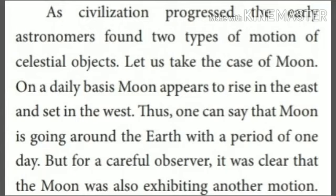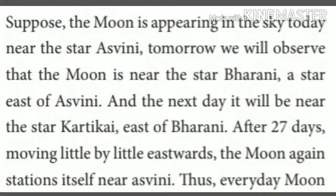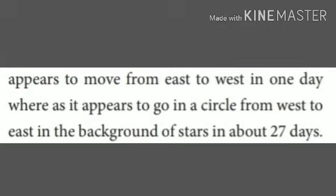As civilization progressed, the early astronomers found two types of motion of celestial objects. Let us take the case of the moon. On a daily basis, the moon appears to rise in the east and set in the west. Thus one can say that the moon is going around the earth with a period of one day. But for a careful observer, it was clear that the moon was also exhibiting another motion. Suppose the moon is appearing in the sky today near the star Aswini. Tomorrow, we will observe that the moon is near the star Barani, a star east of Aswini. And the next day, it will be near the star Karthihai, east of Barani. After 27 days, moving little by little eastwards, the moon again stations itself near Aswini. Thus, every day, the moon appears to move from east to west in one day, whereas it appears to go in a circle from west to east in the background of stars in about 27 days.